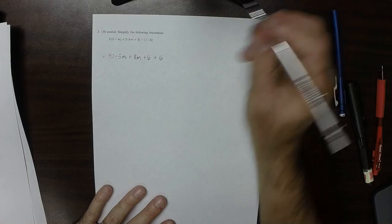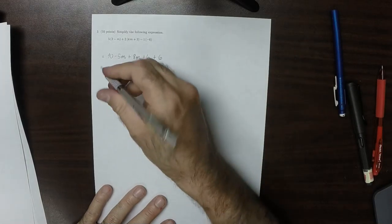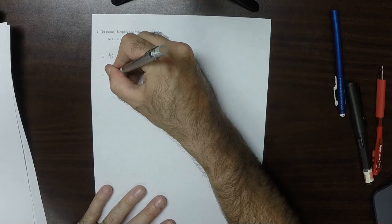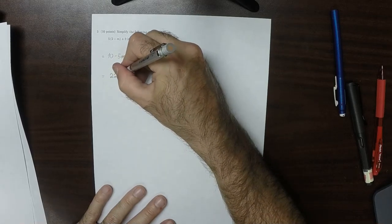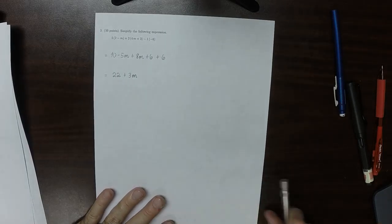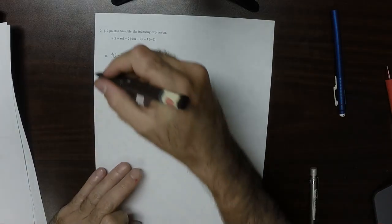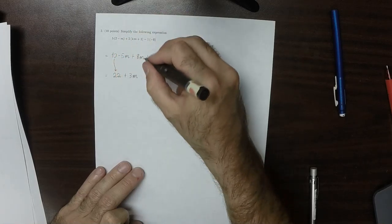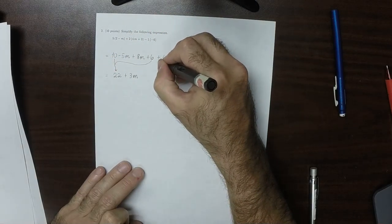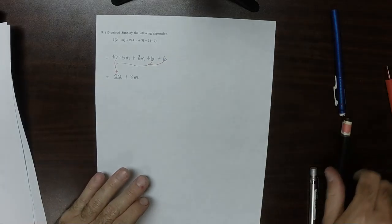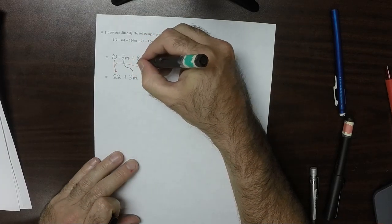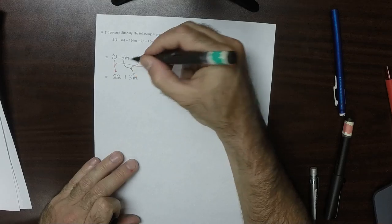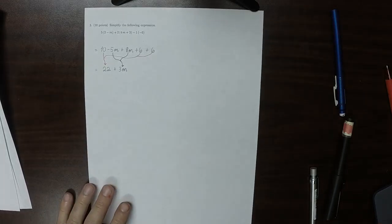So combining things together, that 6 plus 6 is 12, plus another 10 is 22. And then negative 5m plus 8m is 3m. And just to be clear, all the constants combined, and all of the m's combined. And that's the answer.